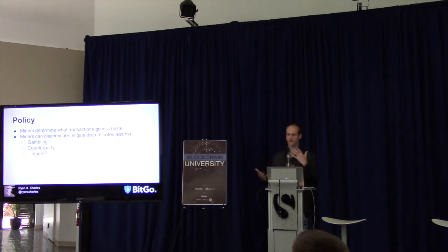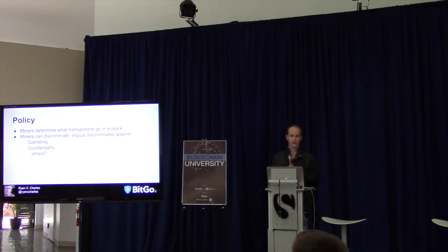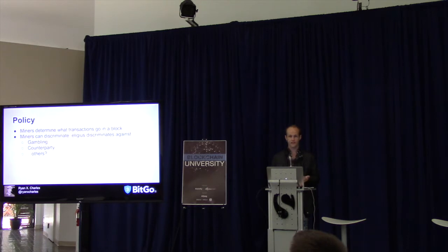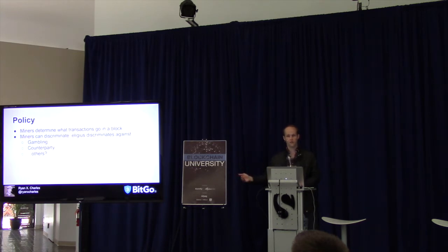Miners can pick their own policy — they accept whatever transactions they want into a block. They do what's in their interests; they want to be profitable. Some miners have their own moral rules. Luke Jr. of Eligius is famous for this — he discriminates against things he doesn't like. He doesn't accept counterparty transactions or Satoshi Dice transactions, having his own rule set. Other miners will accept them, and if they mine those transactions in a block, that's a valid block that Luke Jr. will accept — but he won't be the one mining those transactions.